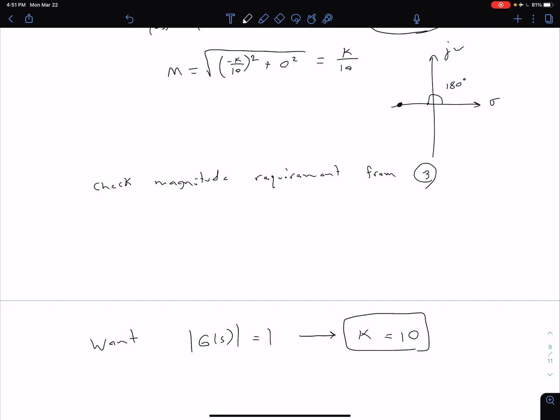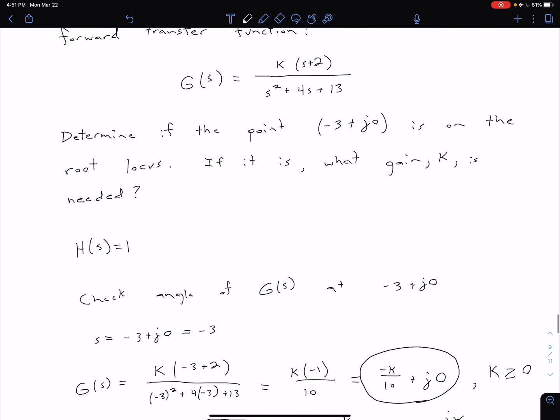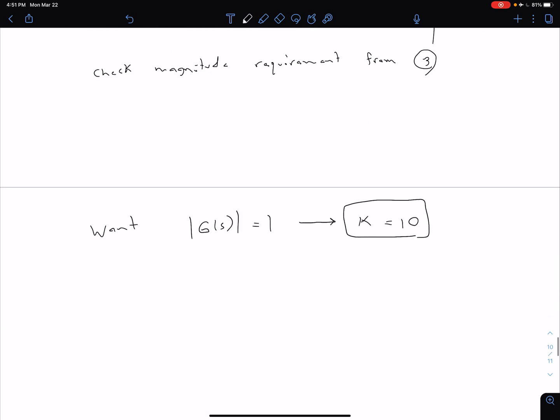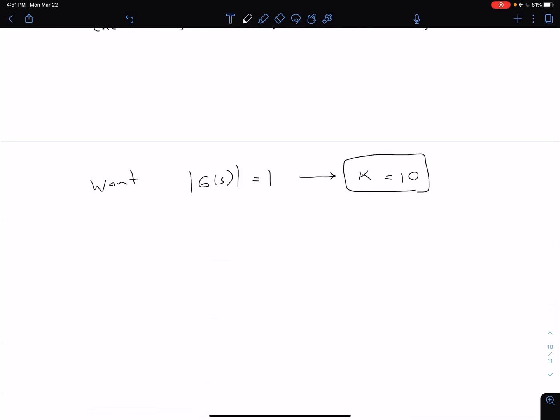To answer our initial question: yes, that point -3 + j0 is on the root locus. To be at that point, we need a gain value of 10.